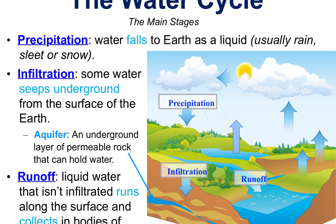Here's some of that vocabulary — the main stages of the water cycle. Precipitation is when water falls from the sky to the earth as a liquid: rain, sleet, or snow. Infiltration is when water seeps into the underground aquifer system to fill that 1% of underground water. Aquifers are an underground layer of rock that hold water almost like an underground river. When water first hits the surface through precipitation, we get runoff — liquid water that runs off into lakes, collects in bodies of water, or eventually infiltrates.